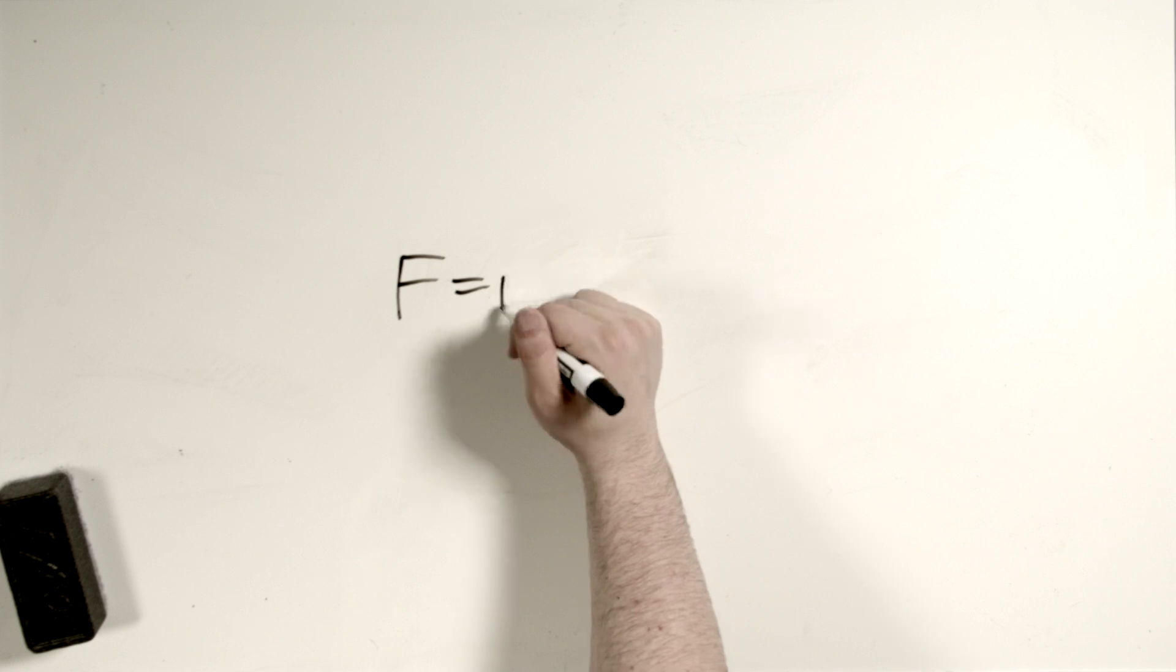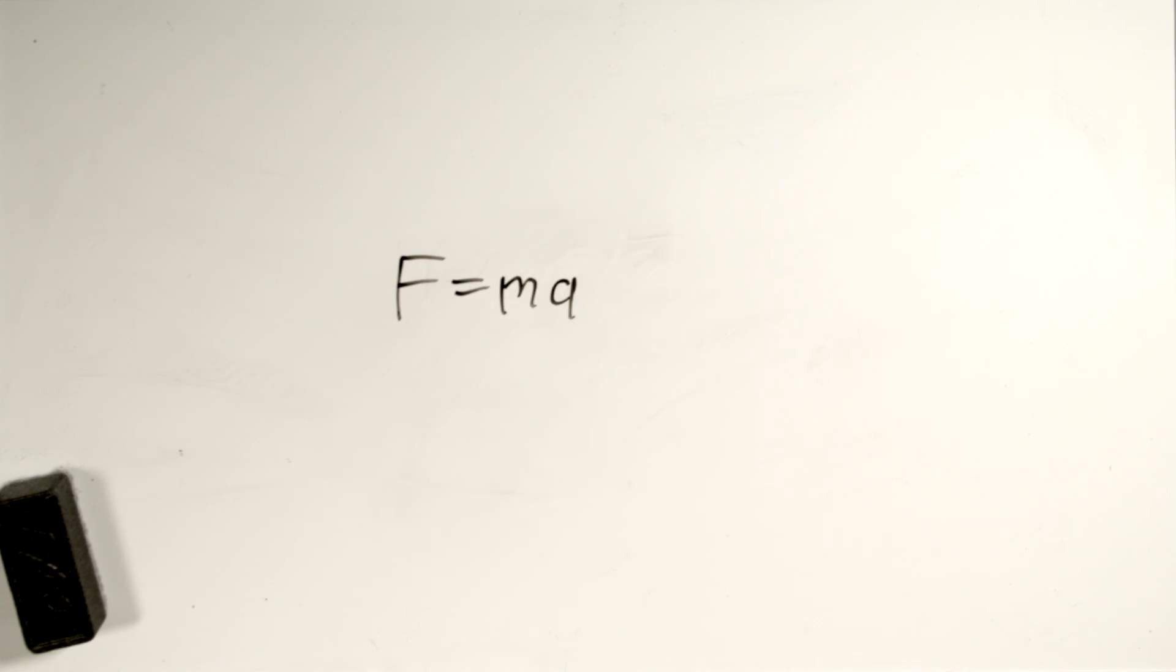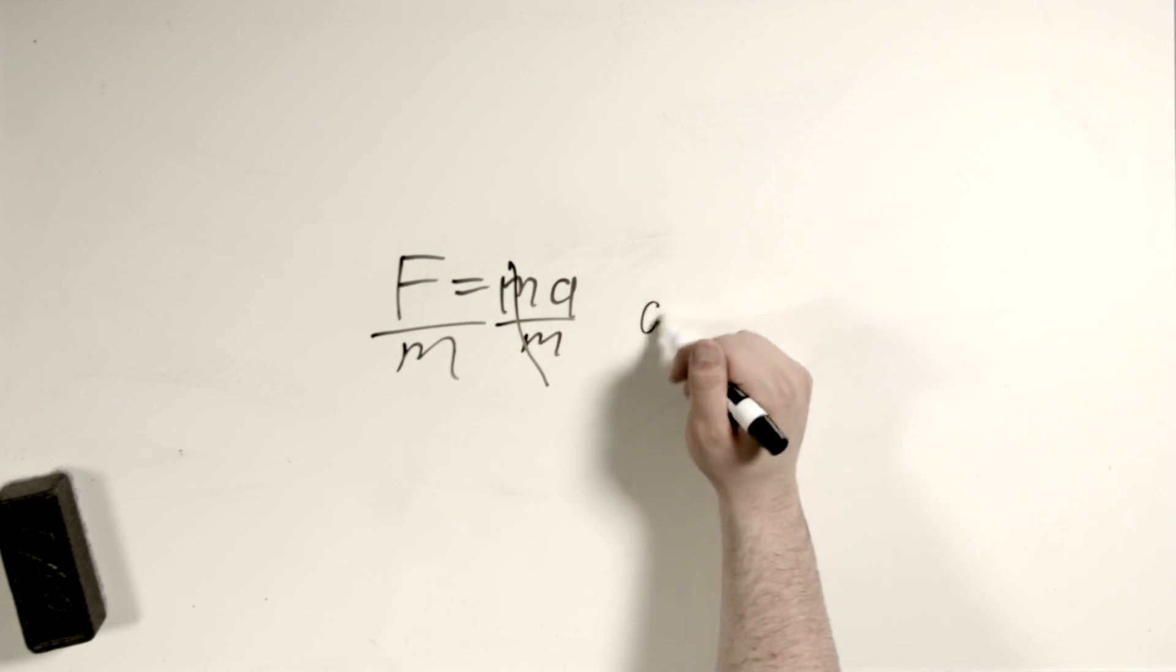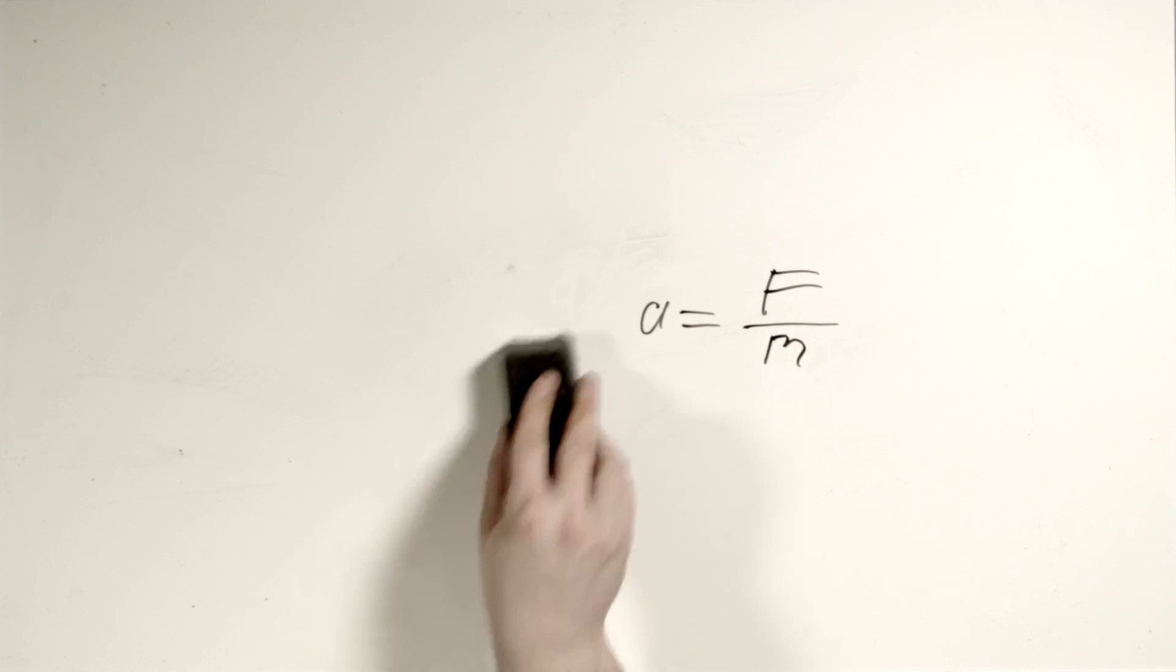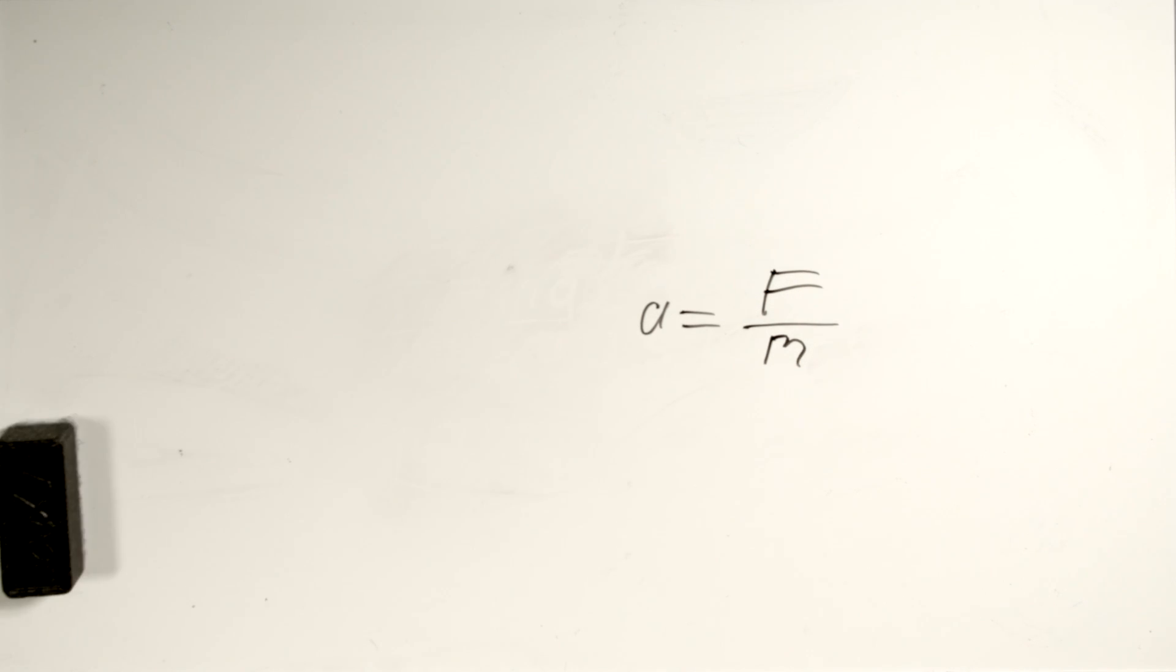So first things first, how do we figure out what our acceleration is? Well, we have the equation from first semester physics, the force equals mass times acceleration, f equals m times a. We know we want to solve for a, so we'll divide both sides by m. These cancel out, and we end up with f over m equals a. So a equals force over mass. And that's great.